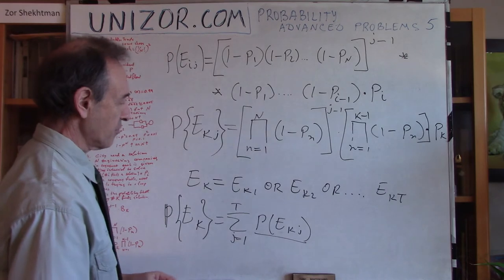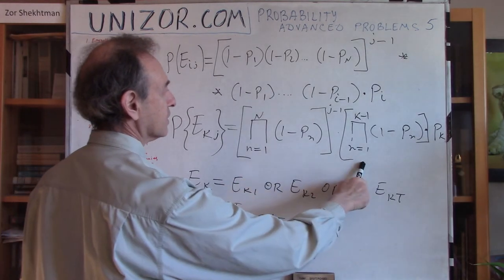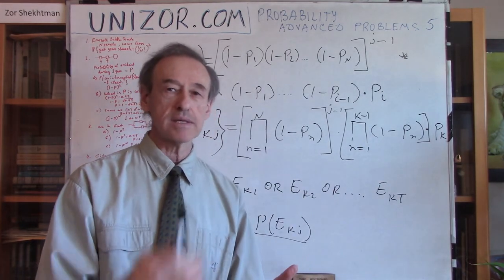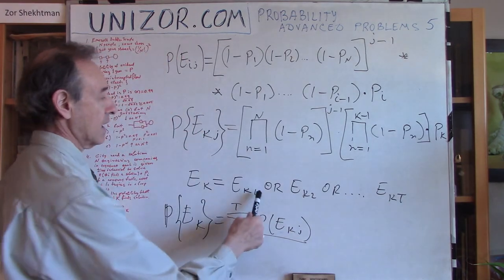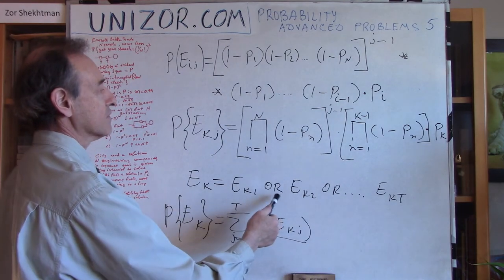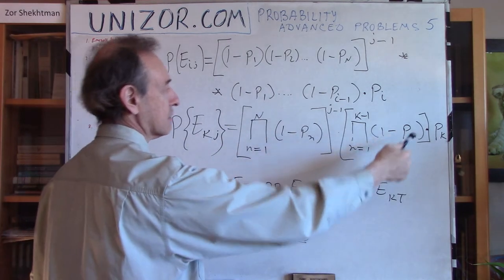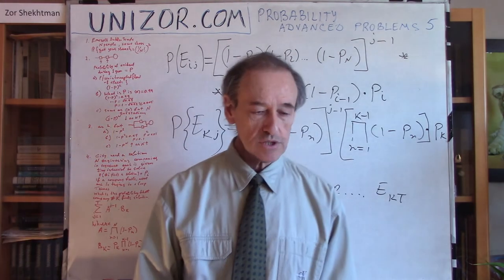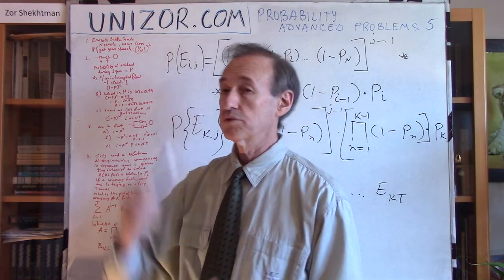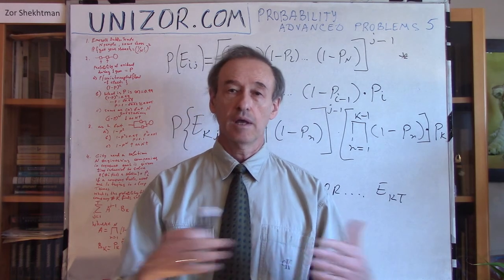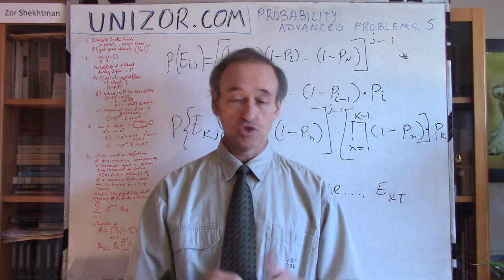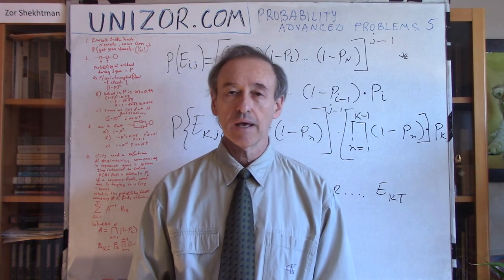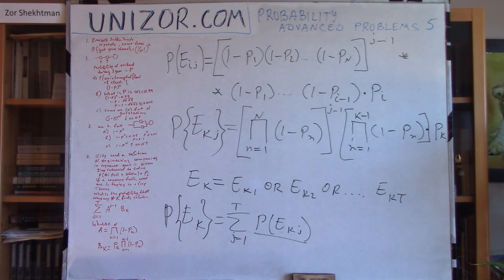That's the final result and the answer. It looks very complex — a sum of products of products — but if you consider it step by step, it's really very simple: a combination of mutually exclusive events, each of which is a product of independent events. I suggest you go through all these problems again at unizor.com in the notes, where there are problems and answers to verify that you've really learned the material well. Thanks and good luck.